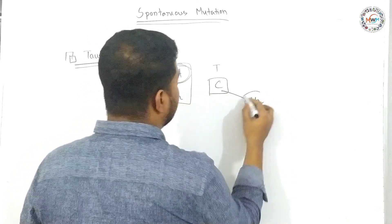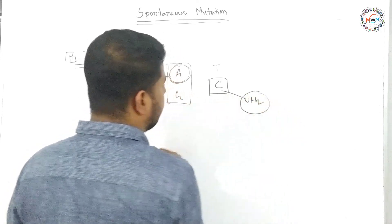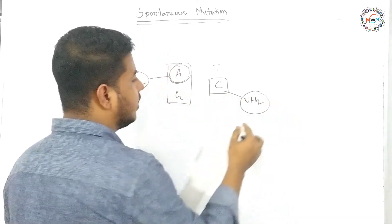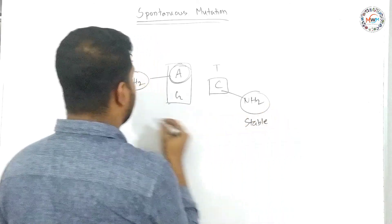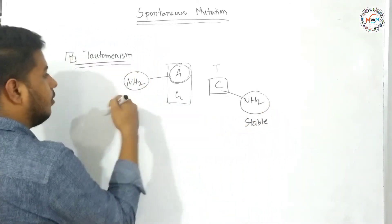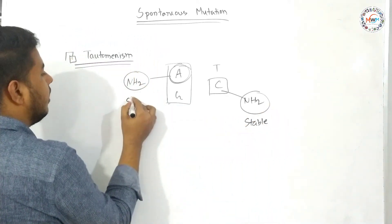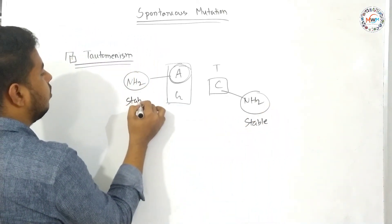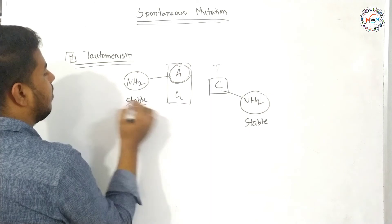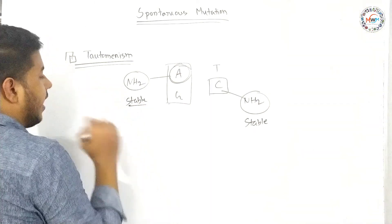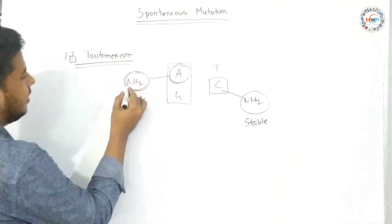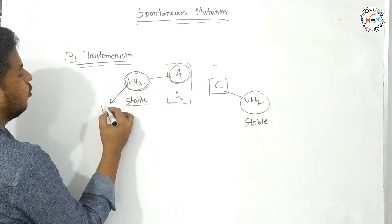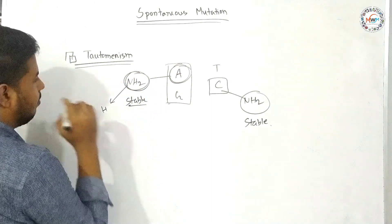The normal form, the stable form, is the amino form. The stable form is the amino form. Now the tautomeric shift transforms the electron — this is the shift.